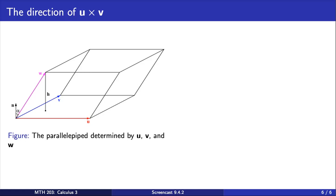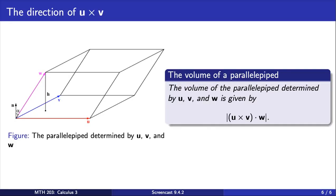The volume of this parallelopiped can be found by taking the cross product of u and v and taking the dot product of the result with the vector w.